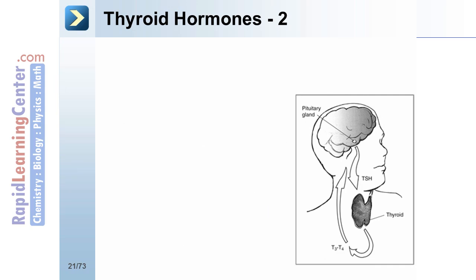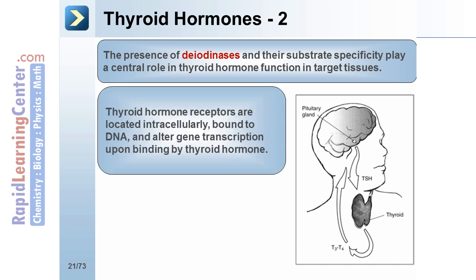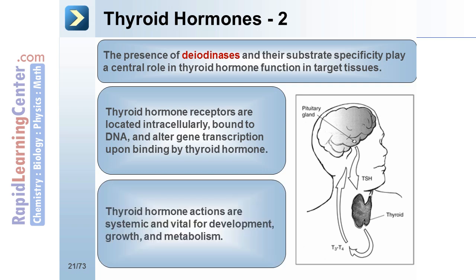Thyroid hormones undergo metabolism in peripheral tissues, leading to the production of the more active T3 and deactivation of thyroid hormones. The presence of deiodinases and their substrate specificity play a central role in thyroid hormone function in target tissues. Thyroid hormone receptors are located intracellularly, bound to DNA, and alter gene transcription upon binding. Thyroid hormone actions are systemic and vital for development, growth, and metabolism.